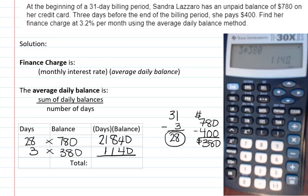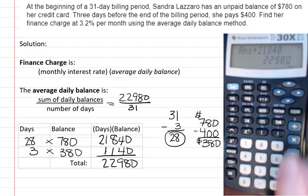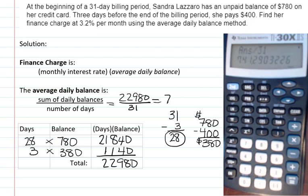But we want the total of all the days. So let's add those together. So we get 22,980. Okay. And that is the sum of your daily balances. If you add it up each of the days, we would get that.